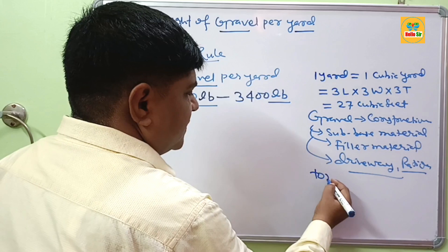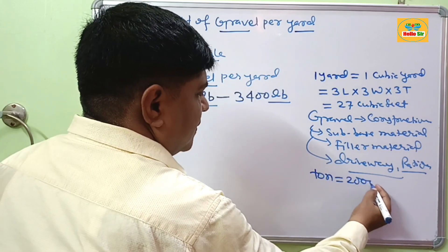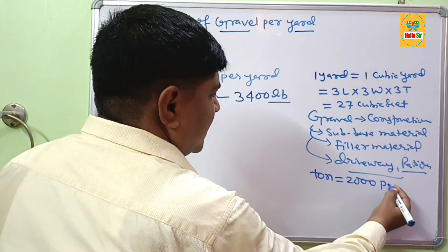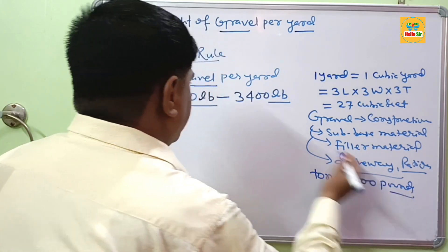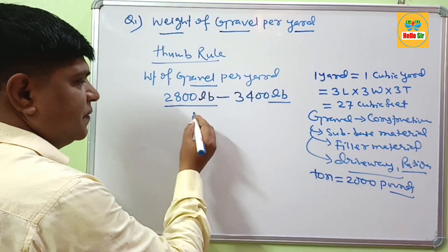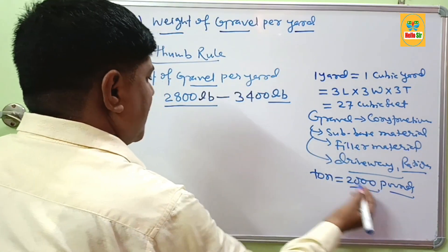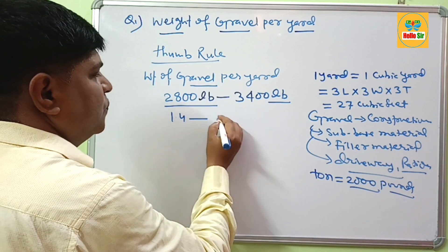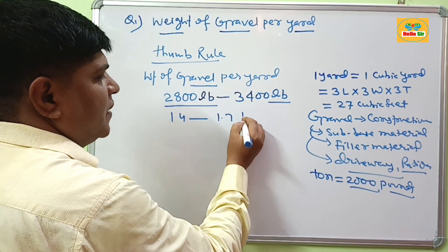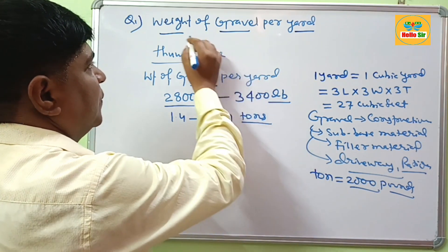If you want this quantity in tons, one ton is equal to 2000 lb. If you divide the figure by 2000 lb, this comes out to about 1.4 to 1.7 tons.